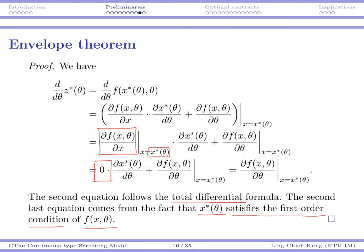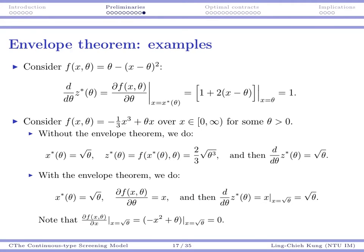Revisiting the earlier example: instead of plugging in x first, I take the derivative with respect to theta treating x as a constant. I get 1 + 2(x − θ). Here x is treated as a constant, not as x(θ). Then I plug in the optimal x*(θ) = θ and get 1 — exactly the same result as before.